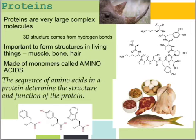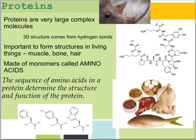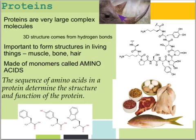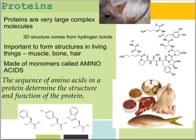The third type of biological molecule to know about are proteins. Proteins are very large and complex molecules. Their three-dimensional structure comes from hydrogen bonds — water's not the only thing with hydrogen bonding; proteins have it too. The hydrogen bonds in proteins hold the protein in a complicated structure that's important for how it works in living things. Proteins are important in the structures of living things — they compose muscles, bones, hair, and even the horns of a rhinoceros. This is all made of a protein called keratin, the same stuff that makes up your hair and fingernails. Proteins are polymers made up of monomers called amino acids.